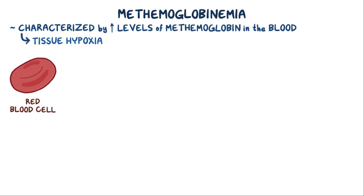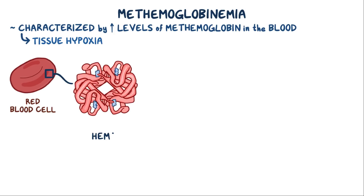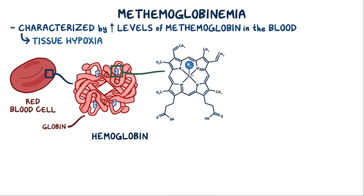Normally, our red blood cells are loaded with millions of copies of a protein called hemoglobin. Each hemoglobin protein is made of four globin subunits, each with an iron-containing heme group. Oxygen can bind to the iron molecule, so each hemoglobin molecule can bind four molecules of oxygen.